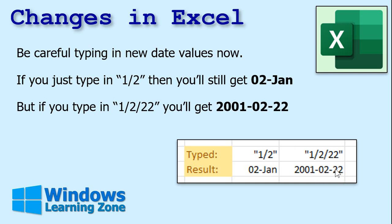It shows 1, 2, 22. It's going to take that input and interpret it as year, month, day — even though you're expecting the old format, it's going to convert it. So be careful. You can still type in the ISO format if you want to use the full year.